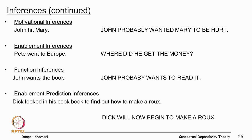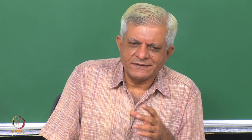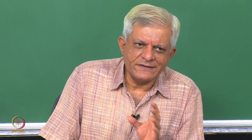Enablement inferences: 'Pete went to Europe' — where did he get the money to travel? Function inferences: 'John wants the book' — he probably wants to read it. Enablement-prediction inferences: 'Dick looked at this in his cookbook to find out how to make a roux' — so he will probably now make that particular dish. Missing enablement inferences: 'Mary could not see the horses finish, she cursed the man in front of her' — she cursed him because he blocked her vision. That is an inference connecting sentences; understanding stories means establishing connections between different sentences.